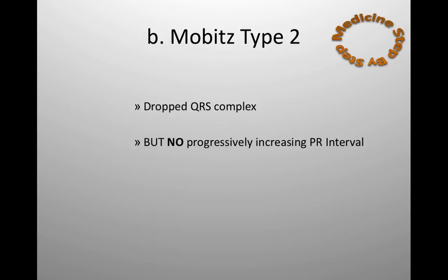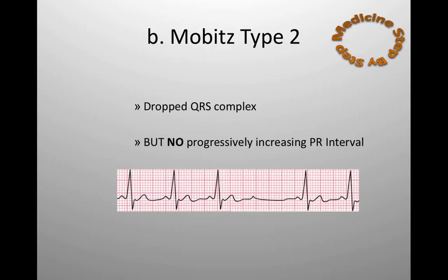The next form of second degree atrioventricular block is Mobitz type 2. Here, there is again a QRS complex dropped, but different from Mobitz type 1, the PR interval is constant and not progressively increasing. So there is a dropped QRS complex in both type 1 and type 2. Here you can see circled the constant PR intervals, with a QRS complex suddenly dropped after a P wave, and then back to a normal PR interval — that's second degree heart block type 2.